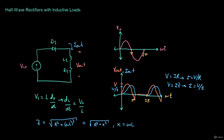One more thing we want to know is how much the current is being delayed with respect to the voltage, because that tells us how deep into the negative portion the output voltage goes. We want to calculate the angle phi — that's the angle from pi until the current goes to zero. That angle is given by phi equals the inverse tangent of omega·L over R.